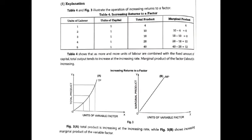In the table, units of labor are the variable factor and units of capital are the fixed factor — capital does not change. When one labor is used with the fixed factor, the marginal product is 4, so total product is 4. When we add one more unit of the variable factor, total product becomes 6, meaning total product is 4 plus 6 equals 10 units.